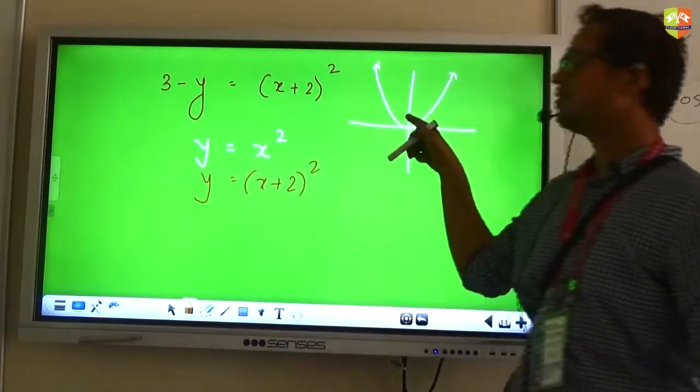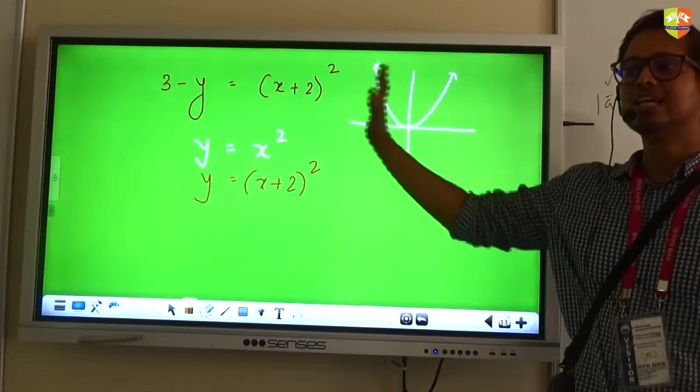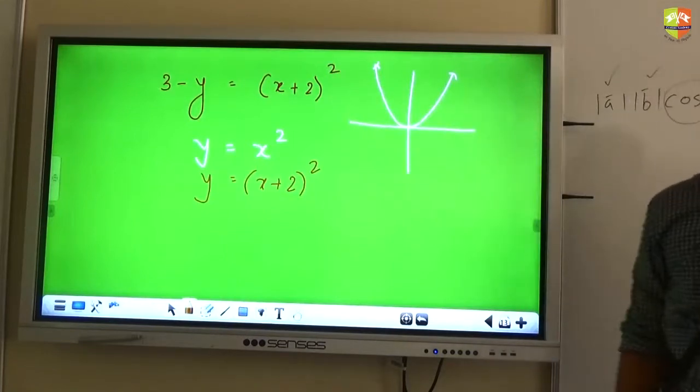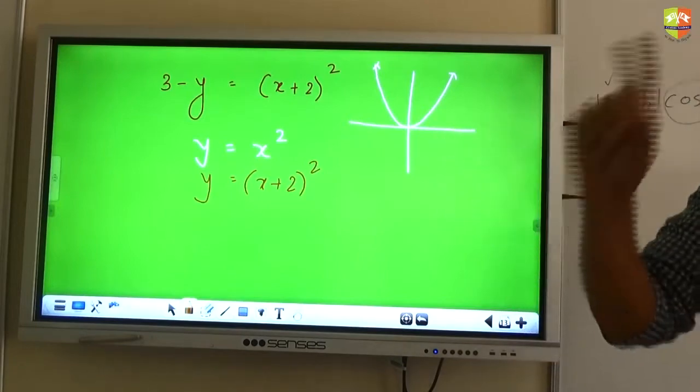Now you want to change your X with X plus 2. What will happen to this graph? 2 units to the left. Not right. Left. So it will become like this now.